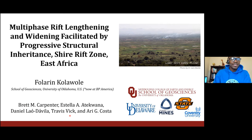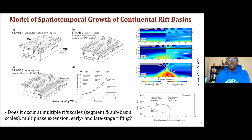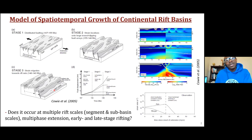Models of continental extensions suggest a basinward migration and focusing of tectonic strain into a narrow zone along the rift axis as continental extension progresses. However, it is not clear if this pattern of strain migration is expected to occur across all rift scales, single and multi-phase extension, and maybe in both early and later stages of extension.